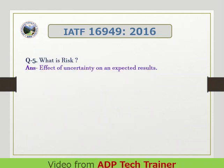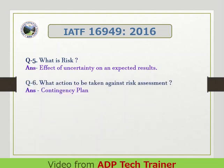Question 5: What is risk? Answer: Effect of uncertainty on unexpected result. Question 6: What action is to be taken against risk assessment? Answer: Contingency plan.